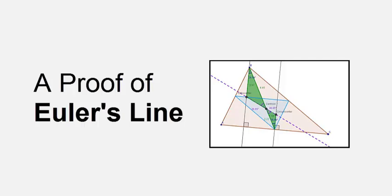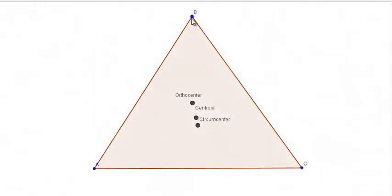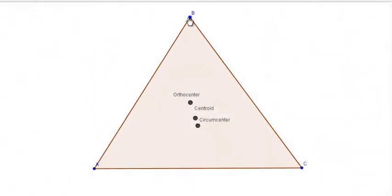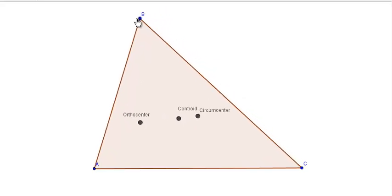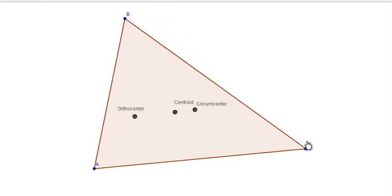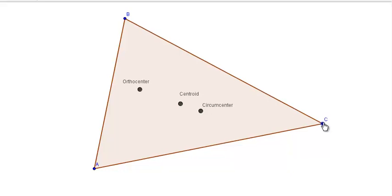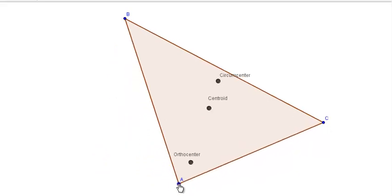Triangles have a variety of different centers, each with an assortment of properties that connect various concepts in geometry. And they can get pretty complicated pretty quickly. But if you take the time to really understand them, you can start making connections between different concepts and some of the stuff can really start to click.